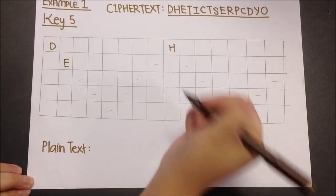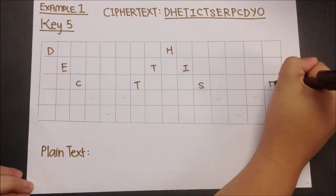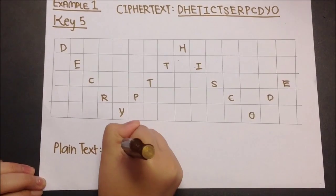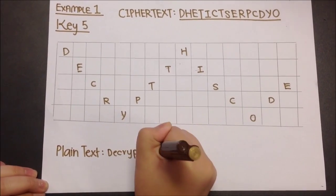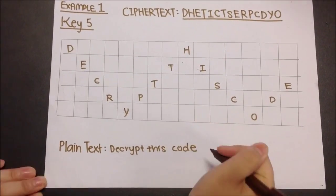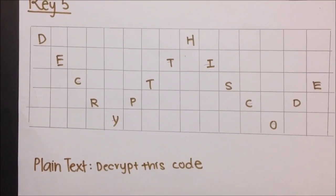After that, replace the dashes with letters row by row starting with the second letter of the cipher text. The completed grid will look like this. After that, read the message diagonally. Thus, the message for this example is Decrypt this code.